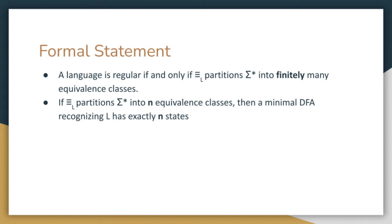Additionally, the number of equivalence classes tells us exactly how many states a minimal DFA that recognizes L will have. In other words, the number of equivalence classes tells us the minimal number of states we need for a finite automaton to recognize L.